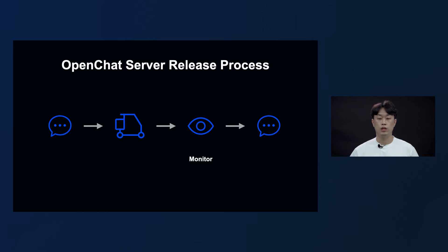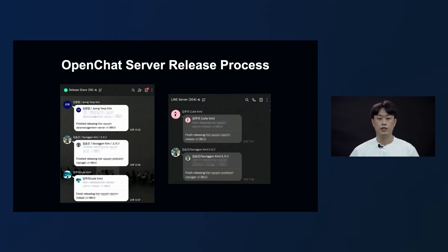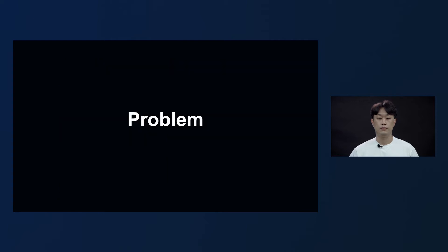After the release of the new code, we have to monitor to see if there are any unexpected issues. If there is a major issue, we roll back. After monitoring, if there is no issue, we share once again to the chat rooms. We share to two chat rooms, and this is the last step in the release process.